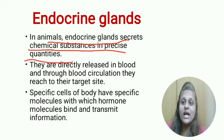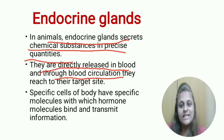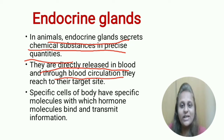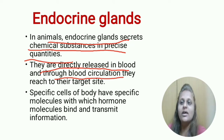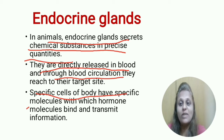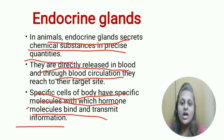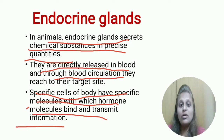Hormones are directly released into the blood. Through blood circulation, they reach their target organ or target site. Specific cells of the body have specific molecules with which hormone molecules bind, and they transmit information from one place to another. This is the basic information about endocrine glands.